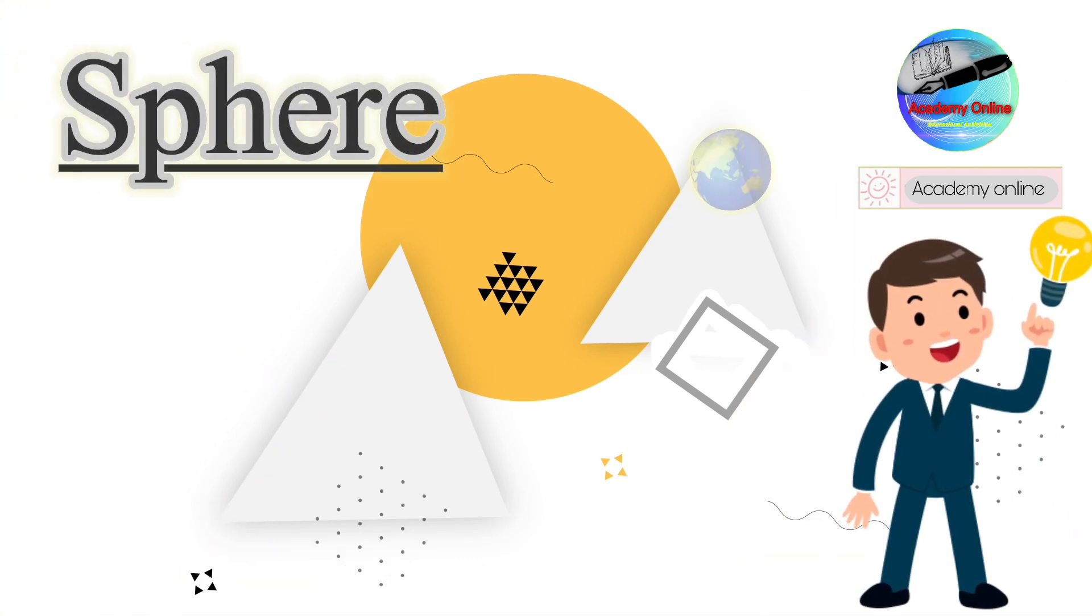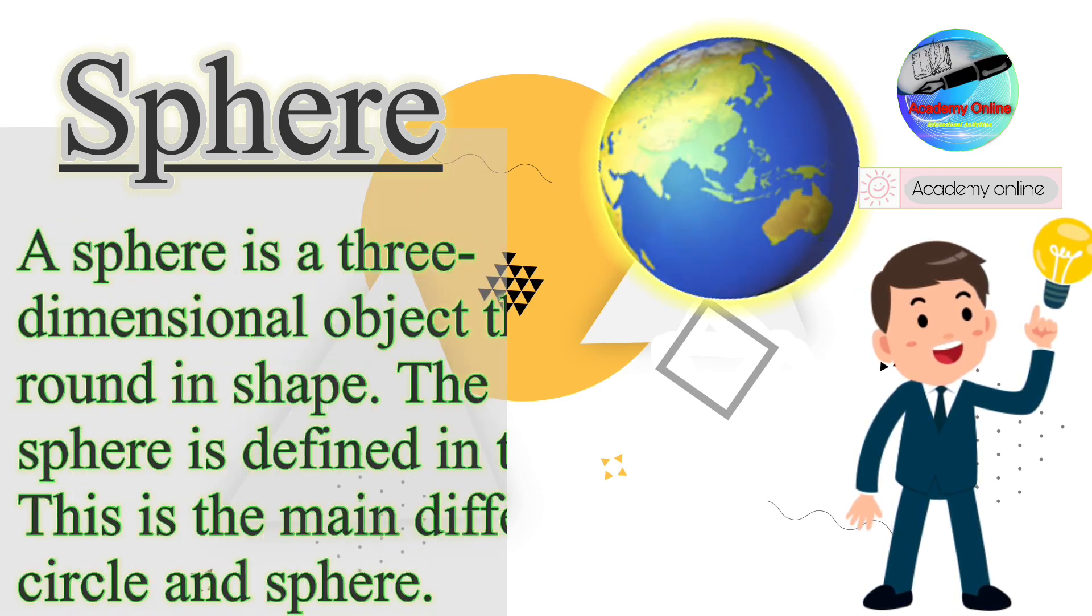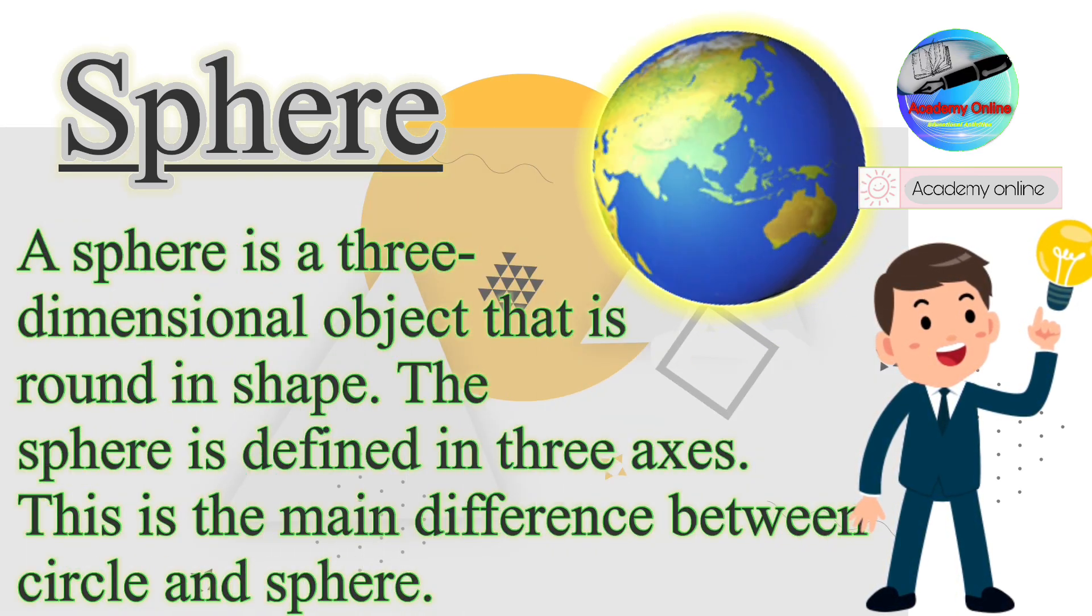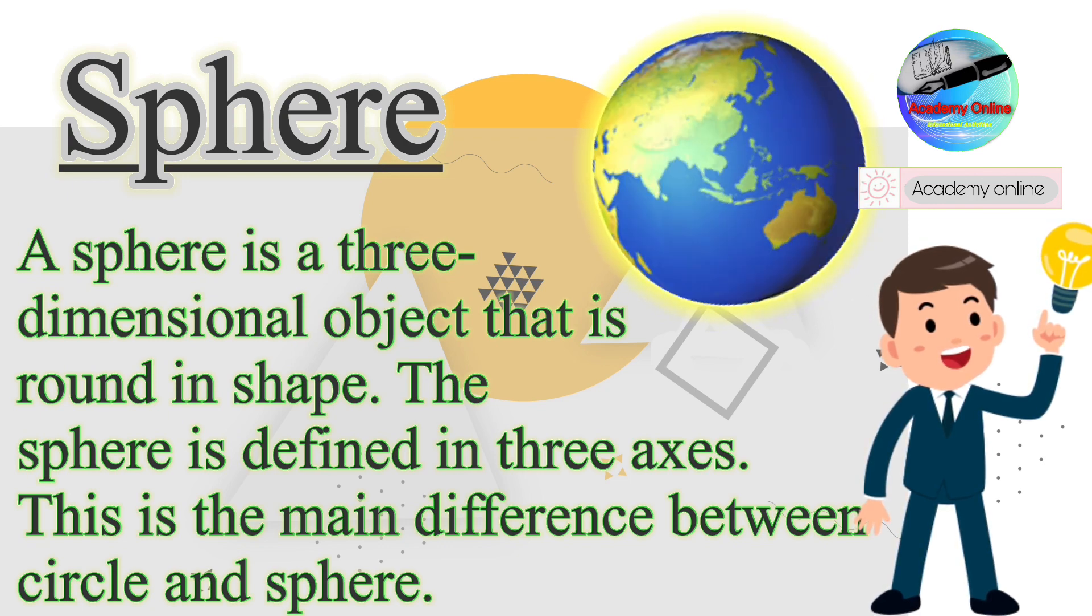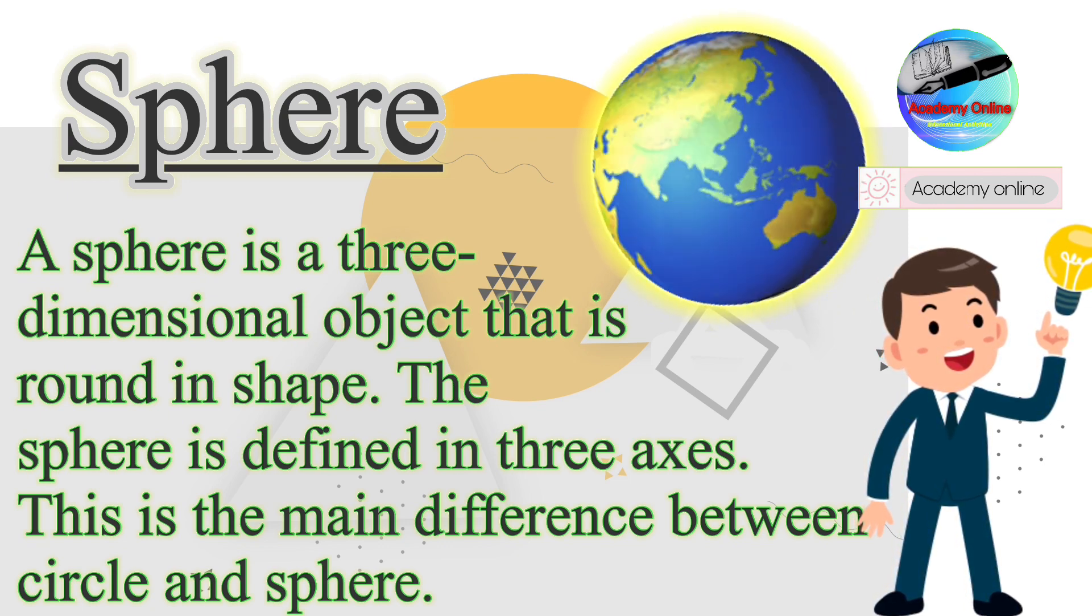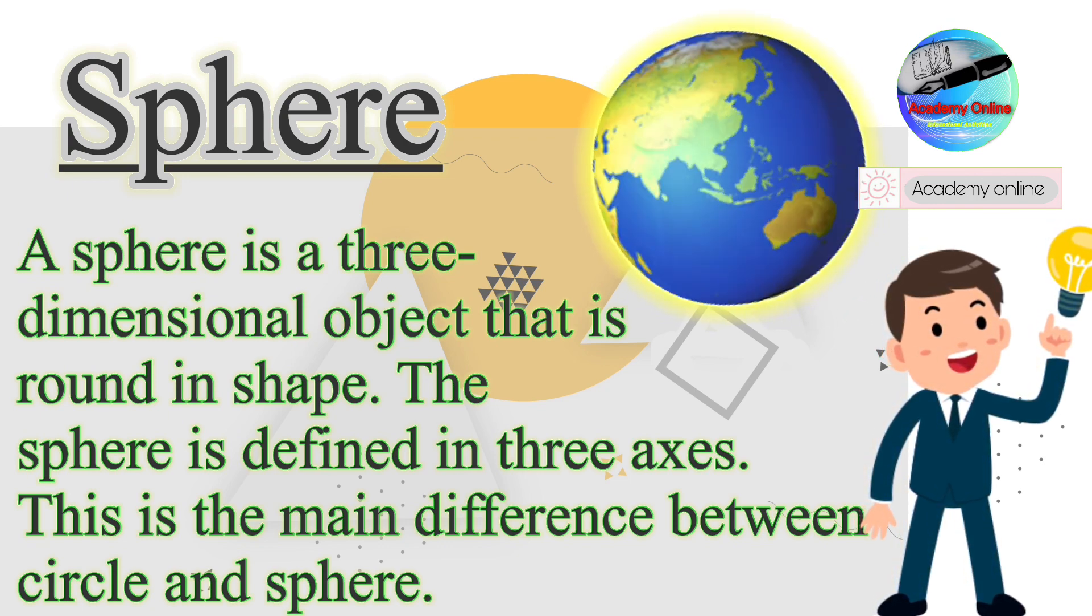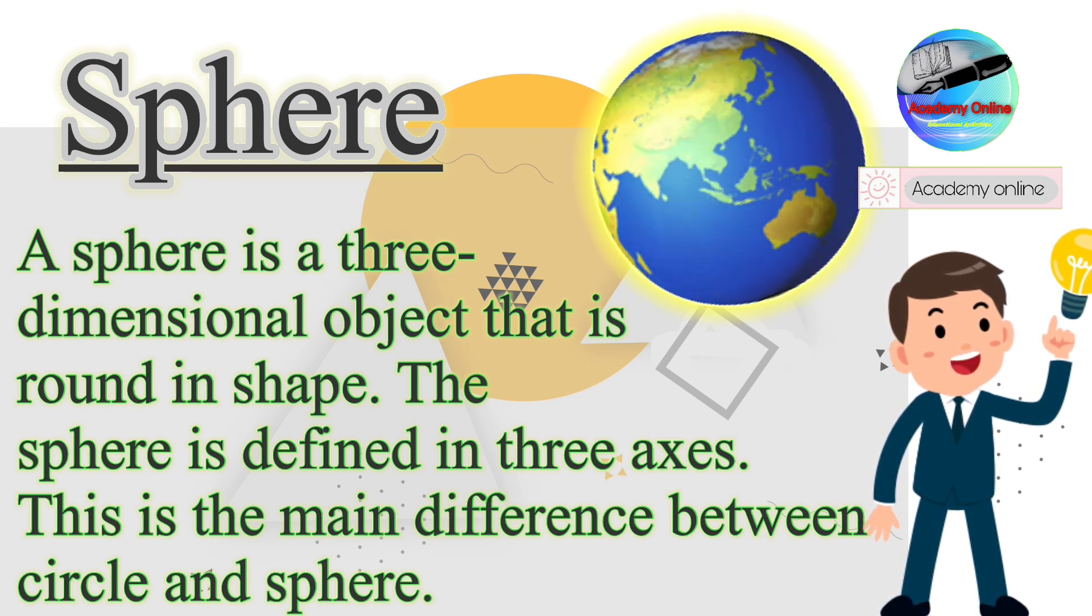Sphere. A sphere is a three-dimensional object that is round in shape. The sphere is defined in three axes. This is the main difference between circle and sphere.